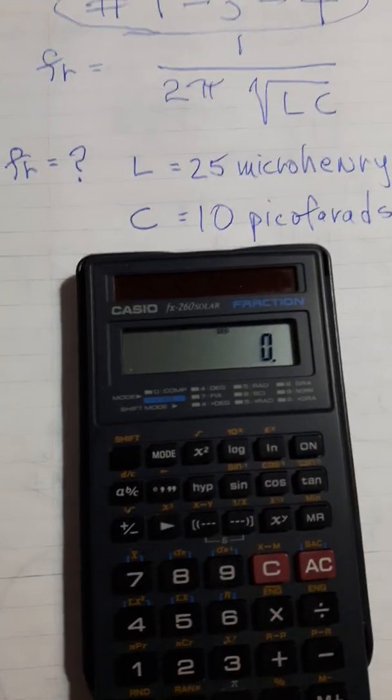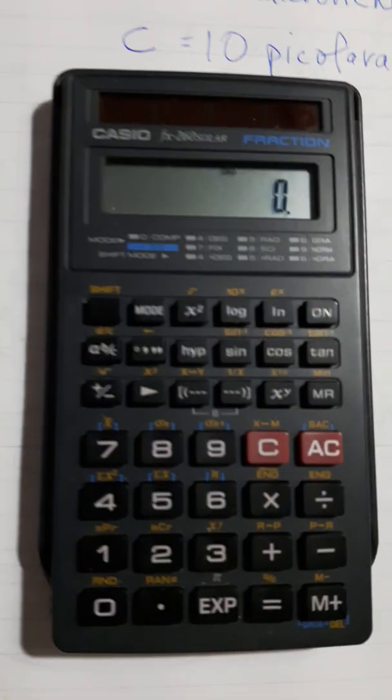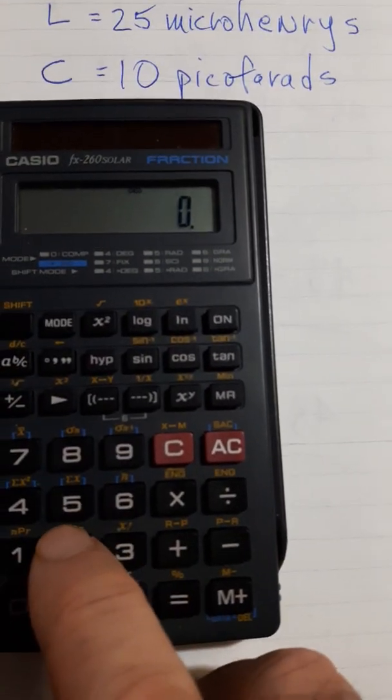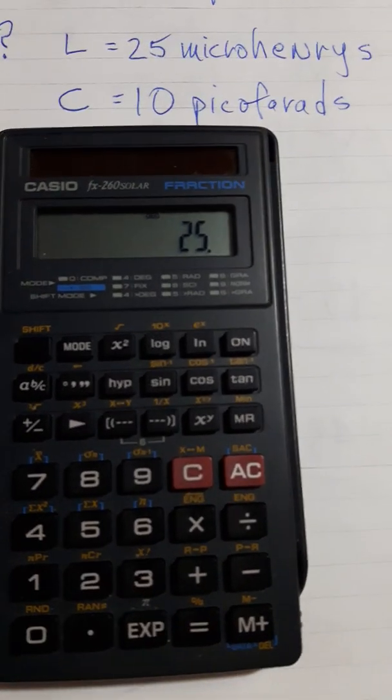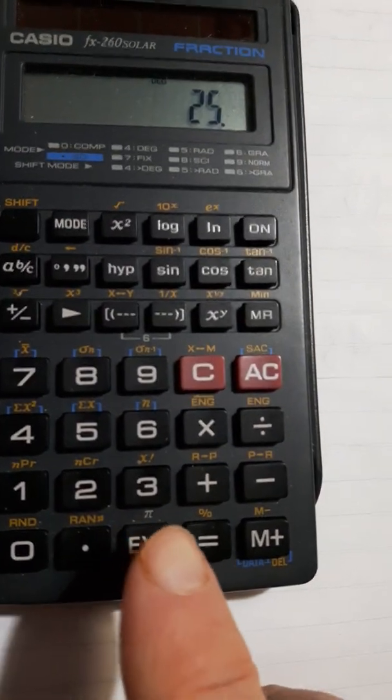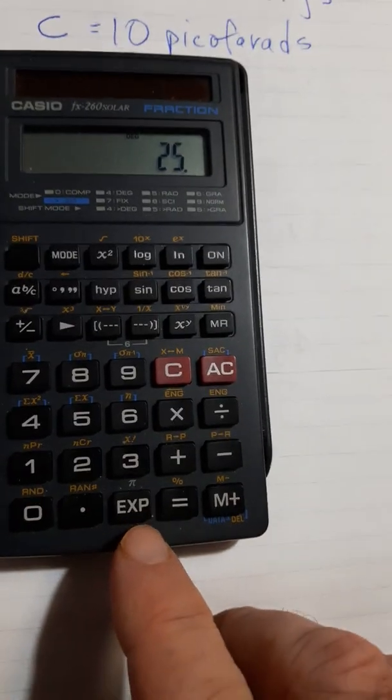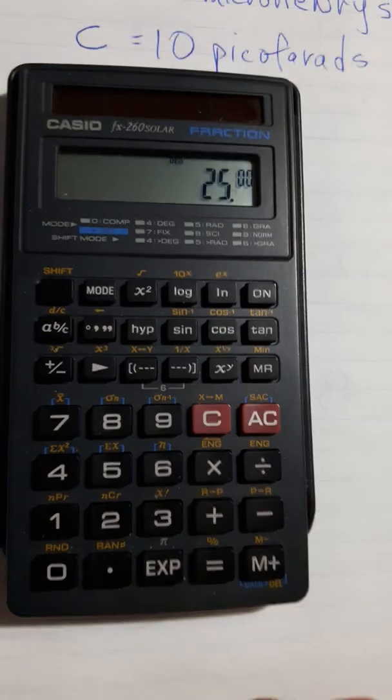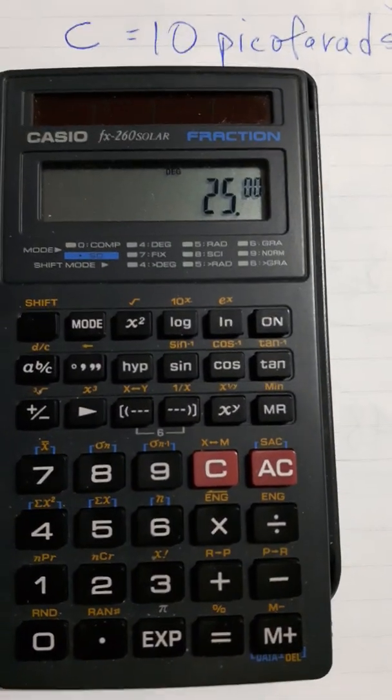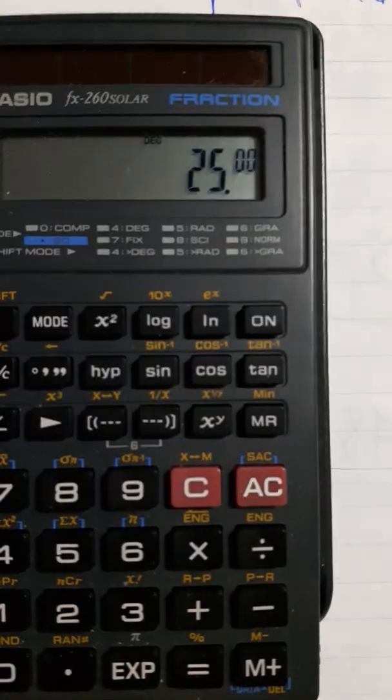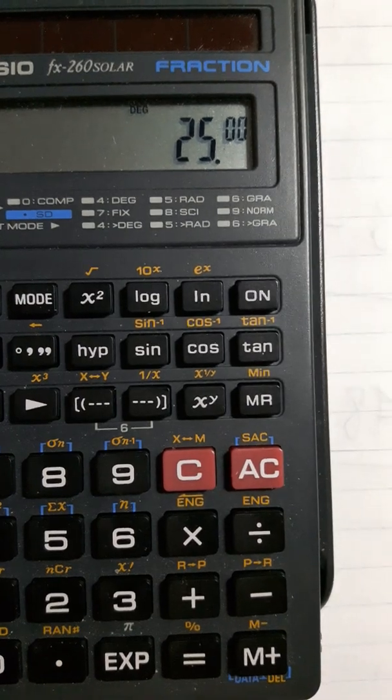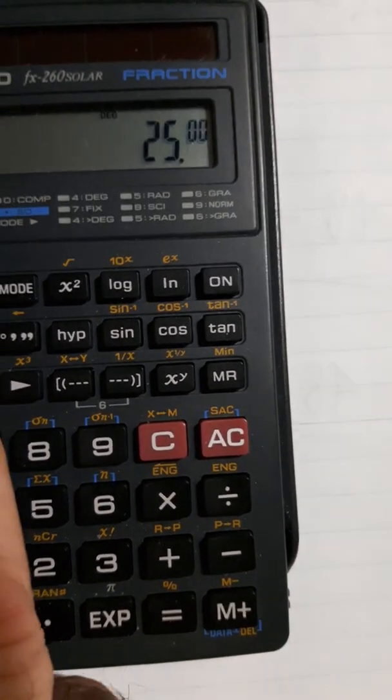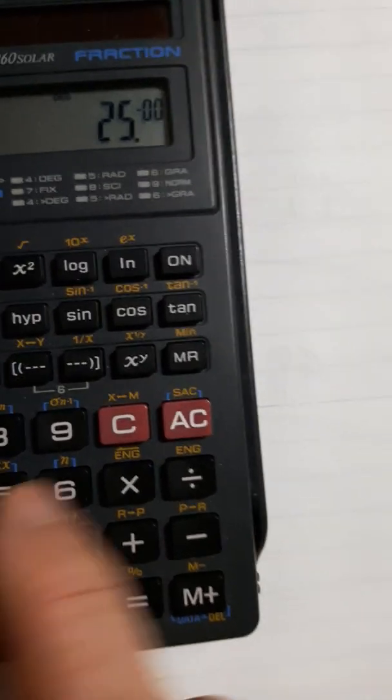Okay, here we go. 25 microhenries, 25, and on this calculator, EXP gives you the scientific notation. So it's going to be EXP, and we know it's micro, so we're going to have to change the sign. You can see the 25 with the two zeros there for an exponent. Change the sign, negative 6.